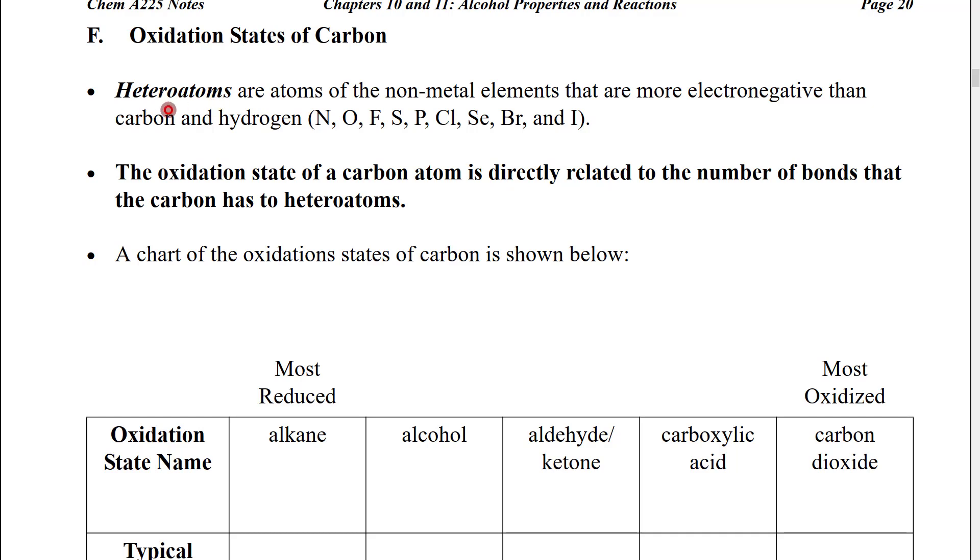I first want to introduce a term, heteroatoms. Heteroatoms are atoms of the nonmetal elements that are more electronegative than carbon and hydrogen. So, if we look at the periodic table, these would be nitrogen, oxygen, fluorine, sulfur, phosphorus, chlorine, selenium, bromine, and iodide. All of the atoms that are in the upper right corner of the periodic table.